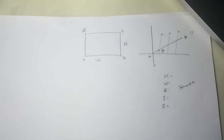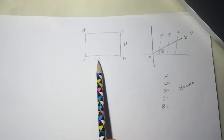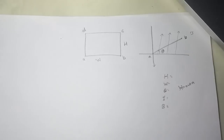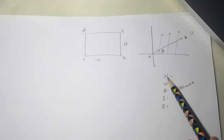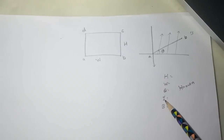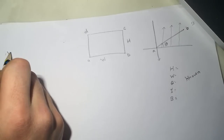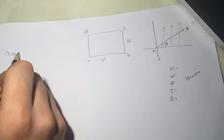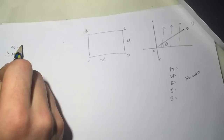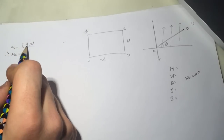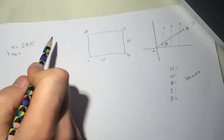Hi guys, this is Smart Physics tutorial for the rectangular current loop. We have a loop with known width and height in a magnetic field at an angle theta. The known quantities are height, width, angle, current, and the magnetic field pointing up. The first question asks for ux, the magnetic moment in the x-direction. In general, the magnetic moment u is equal to I times A times n, where n is the number of turns, A is the area, and I is the current.